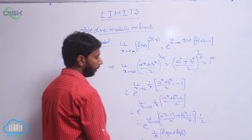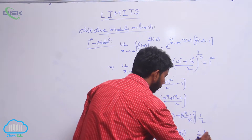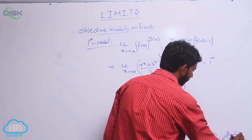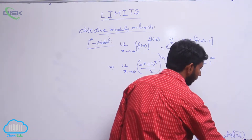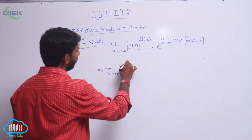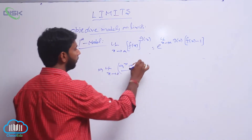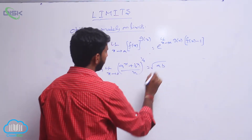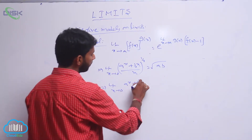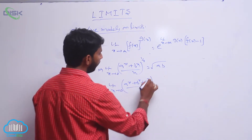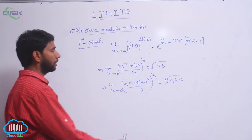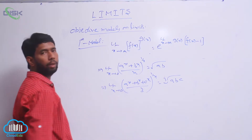Here (a^x - 1)/x = log a and (b^x - 1)/x = log b, so the result is e^[(1/2)(log a + log b)]. Since log a + log b = log(ab), this is e^[(1/2)log(ab)] = e^[log√(ab)] = √(ab). So limit extends to 0 of [(a^x + b^x)/2]^(1/x) = √(ab). Suppose there are 3 terms: [(a^x + b^x + c^x)/3]^(1/x) = cube root of abc.